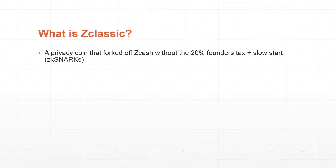So what is Zclassic? It is a privacy coin that forked off Zcash without the 20% founder's tax and a slow start. The slow start meant that initially there was a very small amount of Zcash, and the inflation all of a sudden goes insanely high and the price dumps really quickly. So initially each Zcash was actually selling for more than one Bitcoin. By removing that in Zclassic, there was a more predictable pricing for each coin.